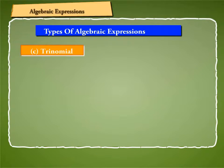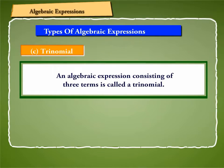C. Trinomial: An algebraic expression consisting of three terms is called a trinomial. For example, 2x plus 3y minus 4 and minus a squared plus b squared plus c squared y squared are trinomials.